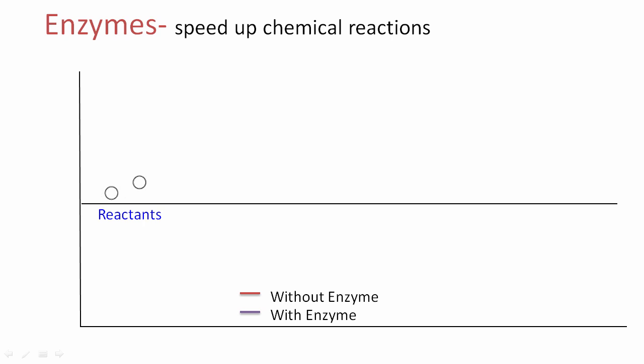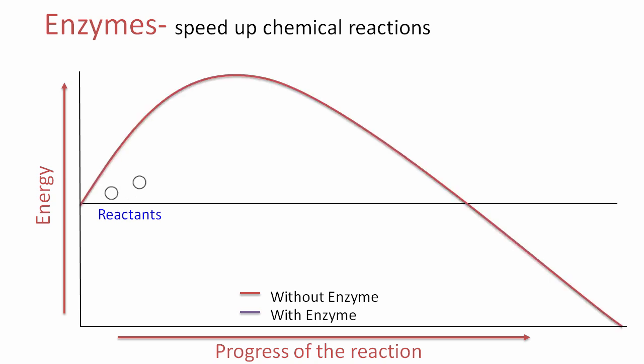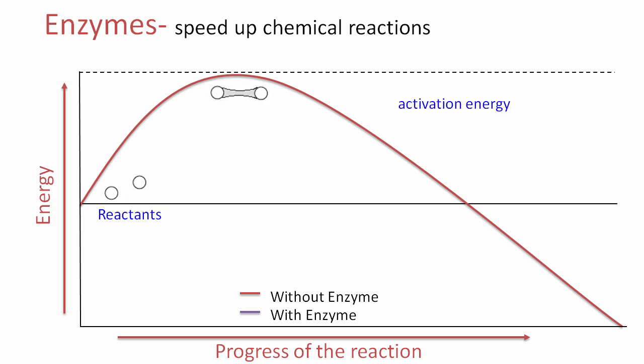So how exactly do enzymes speed up chemical reactions? On the graph, the y-axis shows energy increasing as it goes up, and the x-axis shows the progress of the reaction going to the right. Starting with our reactants — two small spheres — those reactants begin to interact with each other, and as they interact, the energy required increases. As it peaks, we reach activation energy: the minimum amount of energy that must be met for this reaction to take place. Then, as the chemical bond forms, the energy goes down and we have our product.